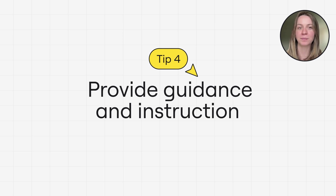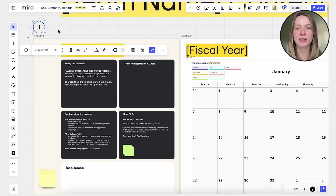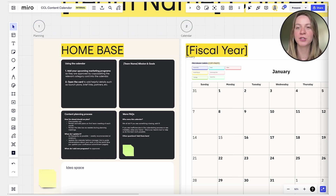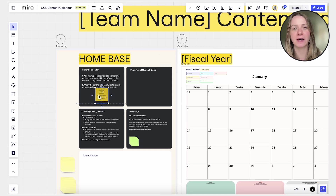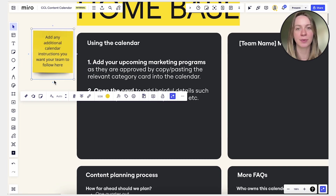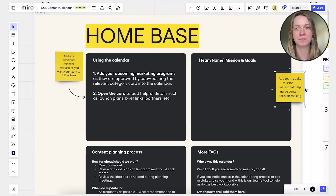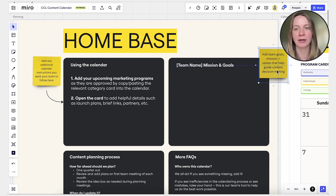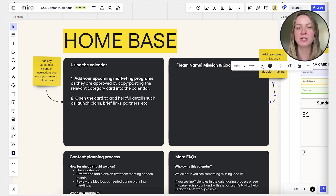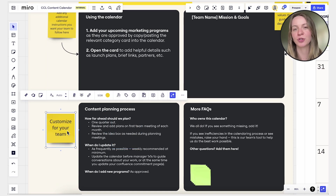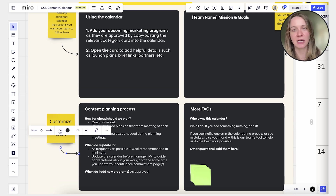Tip number four: provide instructions or guidance. Include instructions and guidance to help users understand how to use the template effectively. For example, you can use arrows or numbers as wayfinders to help users navigate through the template and prioritize your information. Use text boxes or callouts to provide tips, suggestions, or explanations. This ensures that people know what to do and how to get the most out of your template.